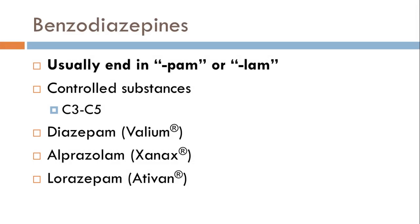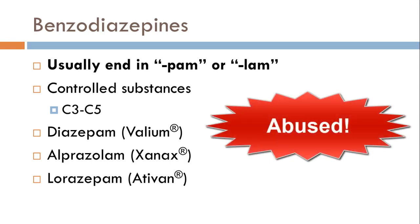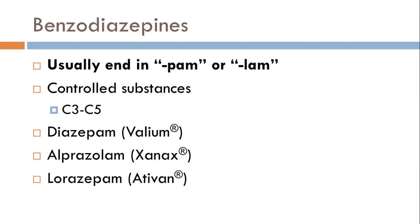Benzodiazepines usually end in PAM or LAM, and that'll tell us these are benzodiazepines. These medications are addictive, they are abused, and they have a high street value. Because of that, you'll see quite a few issues with them — people with 30-day supplies needing more after 10 days, or bringing in multiple doctors' prescriptions. Be very careful with these medications, and make sure none of your co-workers are taking them.